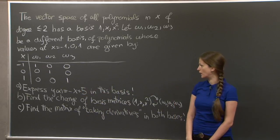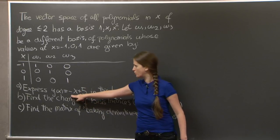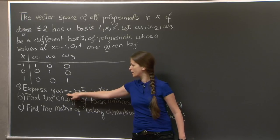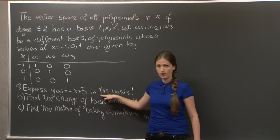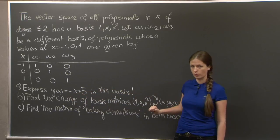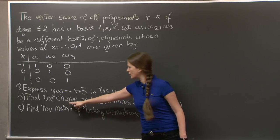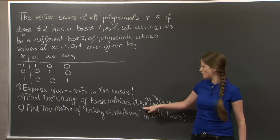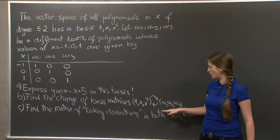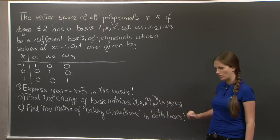We're asked to do the following. We're asked to express this polynomial, y(x) = -x + 5, in this basis w1, w2, w3. We're asked to find the change of basis matrices between these two bases: 1, x, x squared and w1, w2, w3.